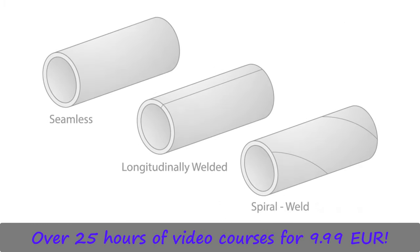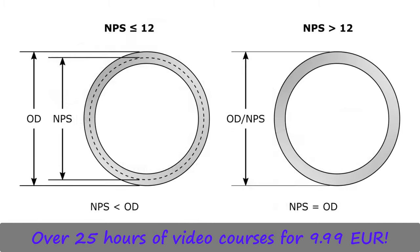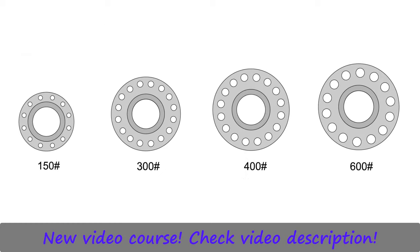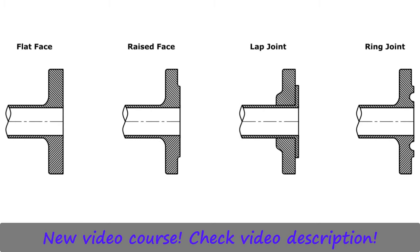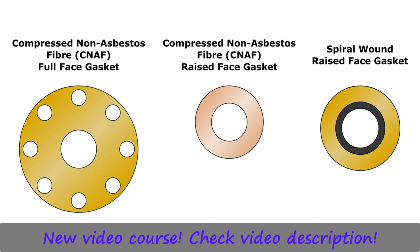We'll take a brief look at pipes, their different types and the different types of pipe ends. We'll discuss nominal pipe size, pipe schedule, pressure class and flange materials. Then we'll take a look at flange faces, flange surfaces, as well as reviewing the different types of gaskets available for flanges and the different fastener types.